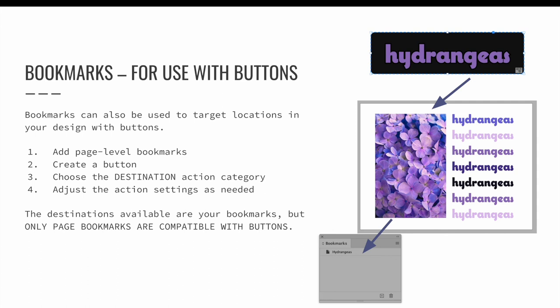Bookmarks can also be used to target locations in your design with buttons. After bookmarks have been added, create a button and then use the destination action. This will activate to show additional options for destinations within your document. The destinations available are your bookmarks — you can choose any bookmark to be your destination, but be careful: it will show all of your text-anchored bookmarks and all of your page-level bookmarks.